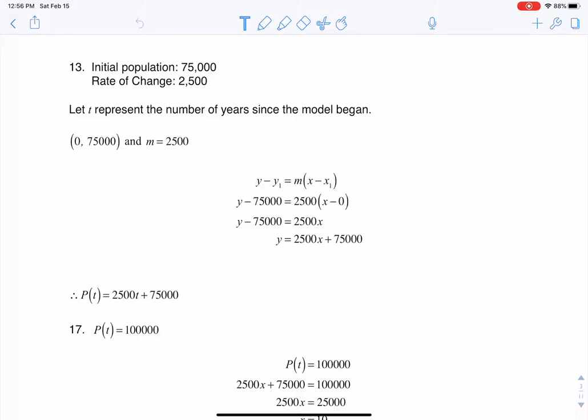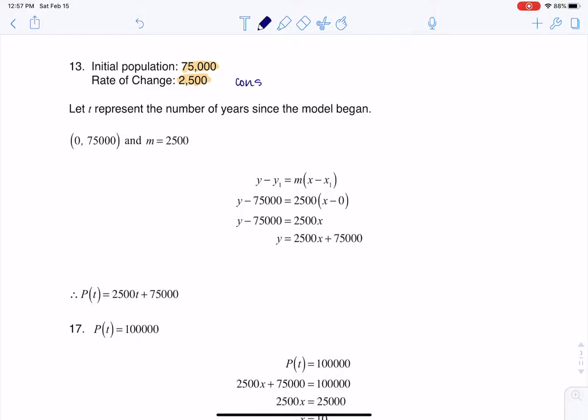Hey, Math 31. I had a question coming out of section 4.2, and I'm going to do 13 and 17 together. This is where we were told that a town had an initial population of 75,000 and that it was growing at a constant rate for five years of 2,500 people per year. So whenever you hear constant rate of change, we're talking about a linear function.